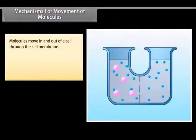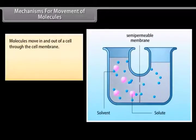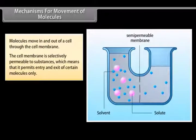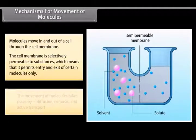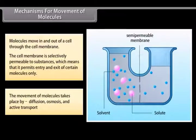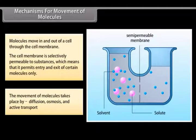Molecules move in and out of a cell through the cell membrane. The cell membrane is selectively permeable to substances, which means that it permits entry and exit of certain molecules only. The movement of molecules takes place by diffusion, osmosis and active transport.